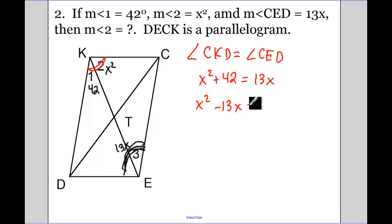When you have a quadratic, you have to set one side to be equal to 0. Then you factor. So two things that multiply to be 42, but add to be 13: minus 6, minus 7.